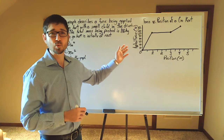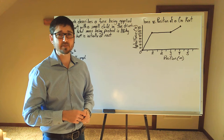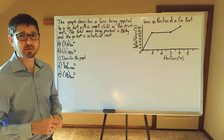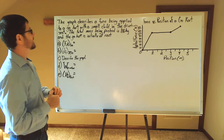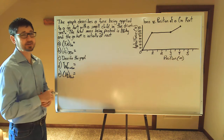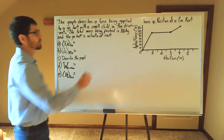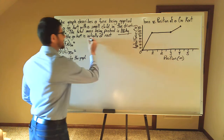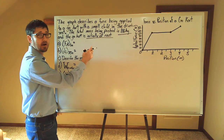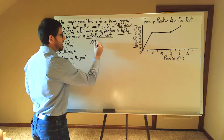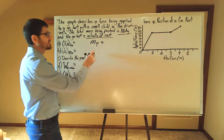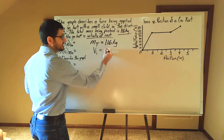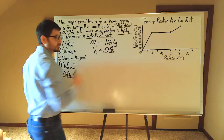So let's go ahead and get started. I'm going to read the problem with you, underline important information, and work through the five parts of this problem with you. The graph describes a force being applied to a go-kart with a small child in the driver's seat. The total mass being pushed is 116 kilograms and the go-kart is initially at rest. Our knowns: total mass m_t = 116 kg, and initial velocity = 0 meters per second.